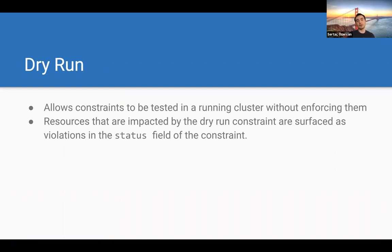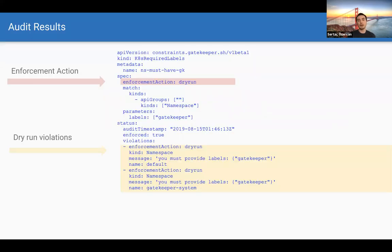Dry run mode lets you test constraints without enforcing them. Similar to audit, violations appear in the status field but are not actually blocked at the webhook level. If you set enforcement action to dry run, the constraint runs in dry run mode. The default enforcement action is deny. Violations are visible in audit results but not enforced — so you can validate policy behavior safely before switching to deny mode.